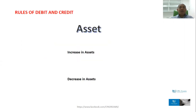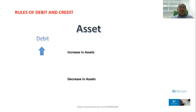Now, here are the rules of debit and credit. For assets: all accounts under asset — if the asset will increase, it will be debit. If the asset will decrease, then it will be credit.